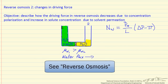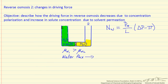In another screencast, the idea of reverse osmosis is described and some of the equations are presented. Here I just want to discuss how that driving force for permeation changes because of a couple of factors: one, concentration polarization, and two, because of the fact that we're permeating the solvent through a membrane, therefore changing the feed concentration.